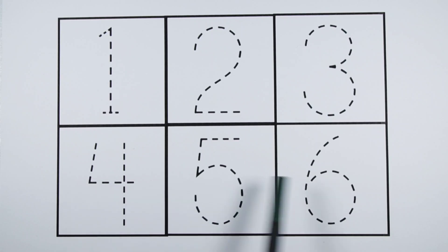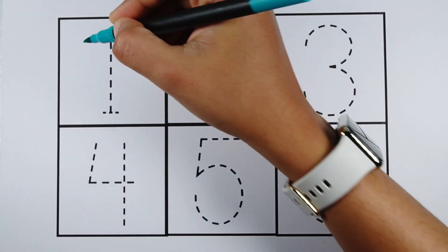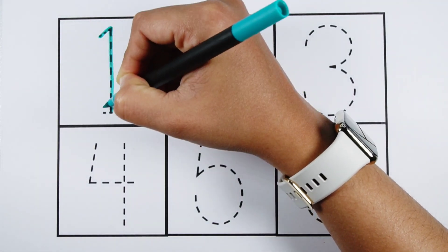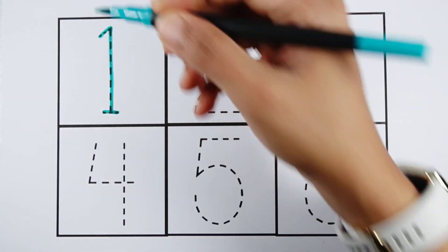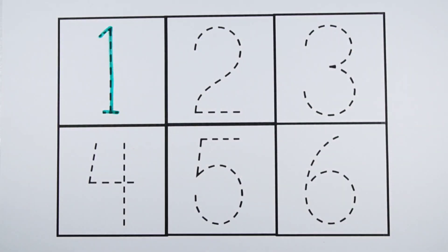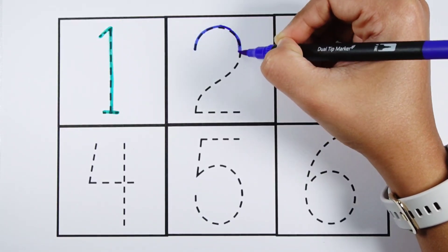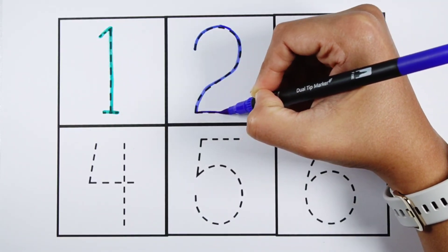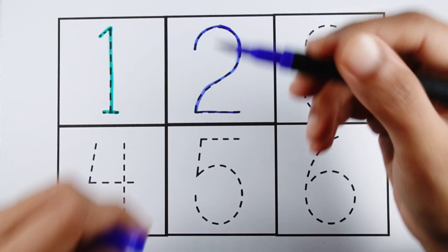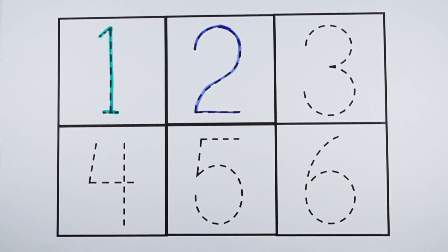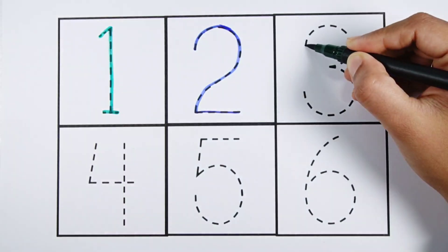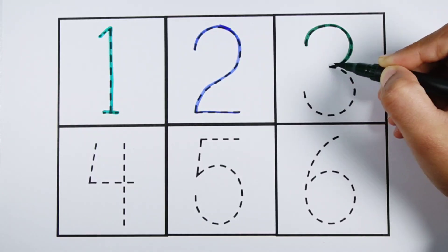Let's learn to count some numbers: one, two, three, four, five, six. Number one. Number two. Number three.